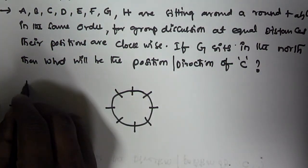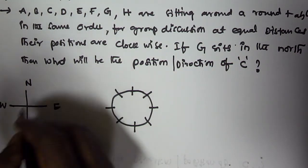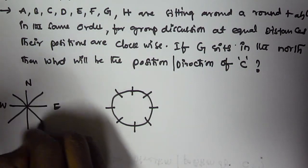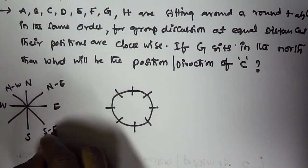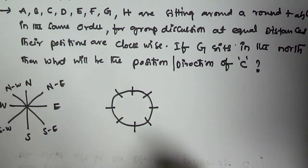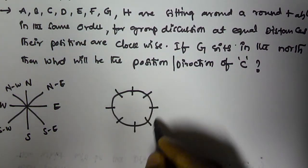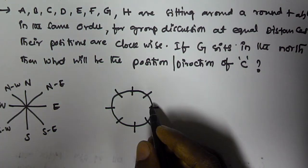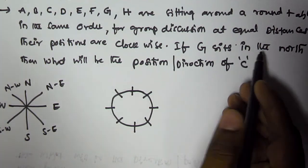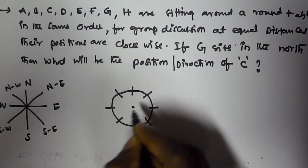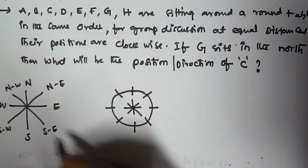So before this, we take the basic directions. This is north, and this is south, this is east, and west. And then we have north east, north west, south east, and south west. So there are 8 directions. 8 people are sitting around the round table for discussion at equal distances.